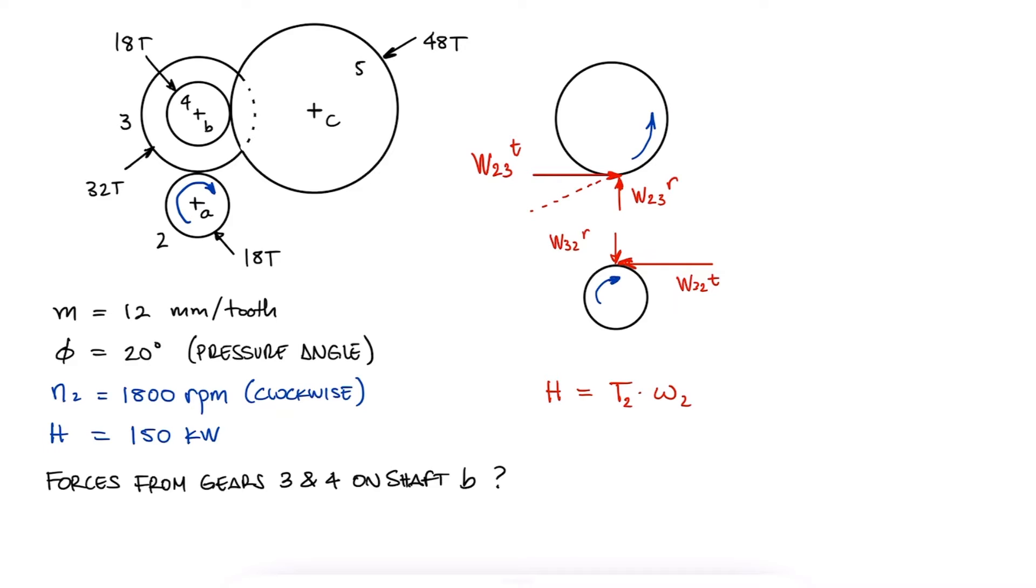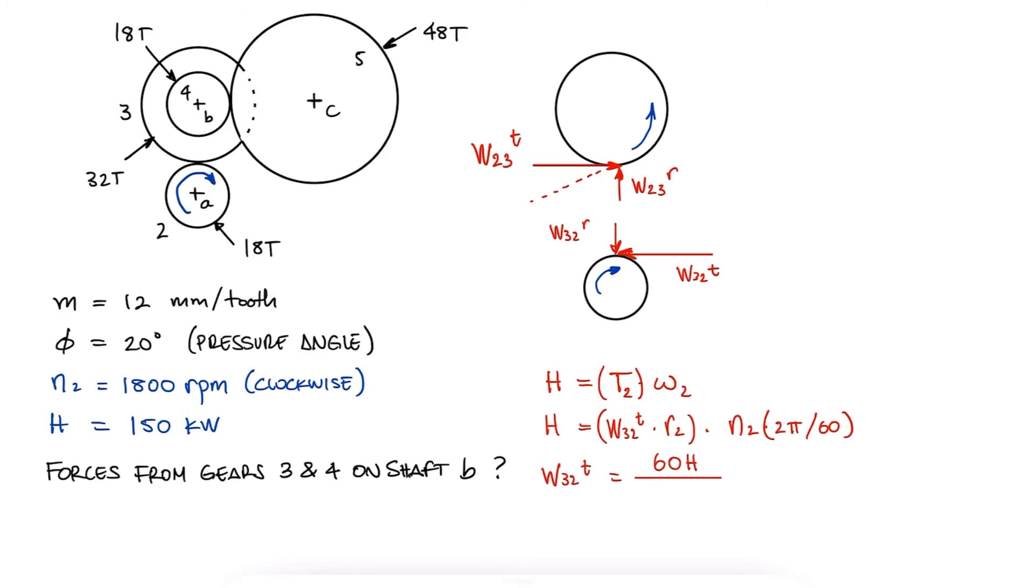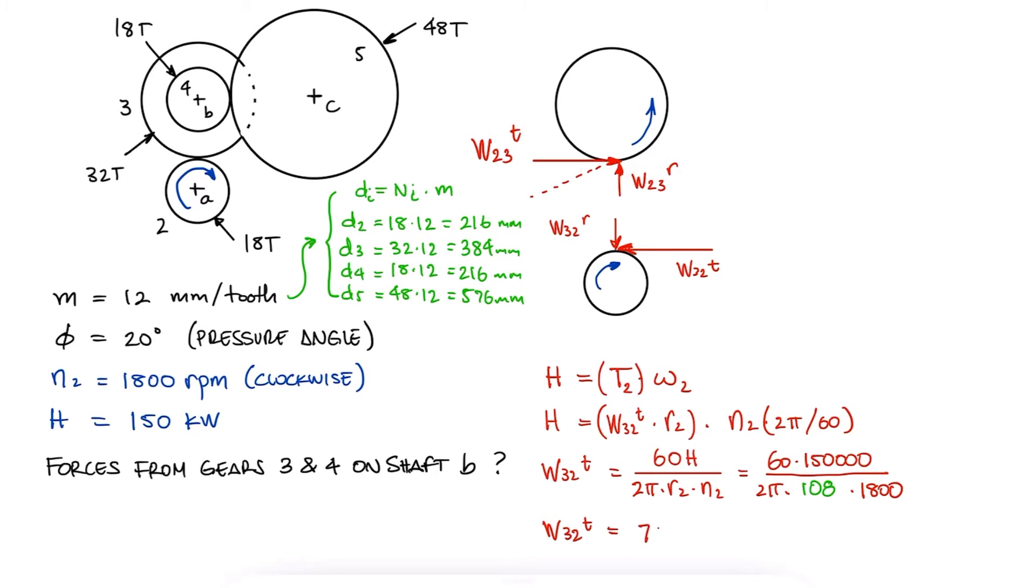From the power equation, we see that if we have the revolutions per minute of gear 2 and the tangential component and the radius of gear 2, which are the two variables that we need to calculate the torque, we can solve for that tangential component. Realizing that we're going to need the radii of the gears, we use the number of teeth of each gear and their module to find the diameter of each gear. The tangential component of the interaction force between gears 2 and 3 is therefore 7.4 kN.